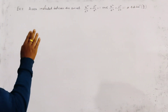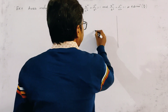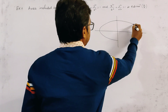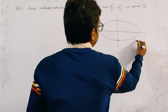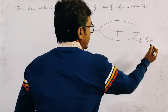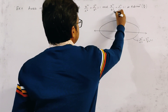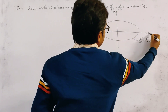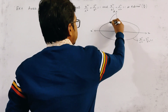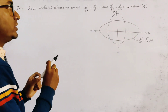Now we first draw a rough sketch of the two curves. Both are well-known curves. We draw the first ellipse, given by x²/a² + y²/b² = 1. This ellipse is symmetric about both the x and y axes. The second ellipse has its major axis along the y-axis. This is the rough sketch of the area.